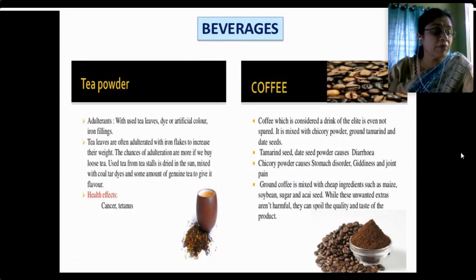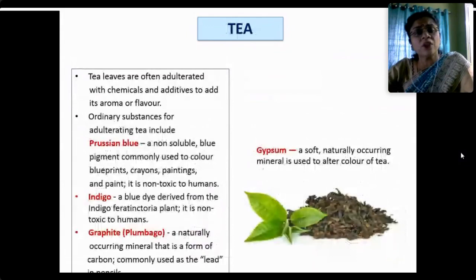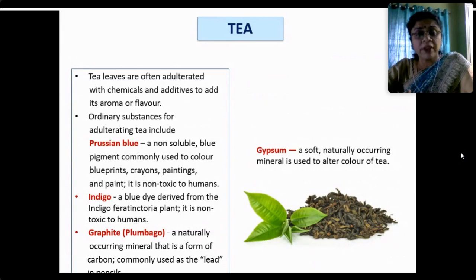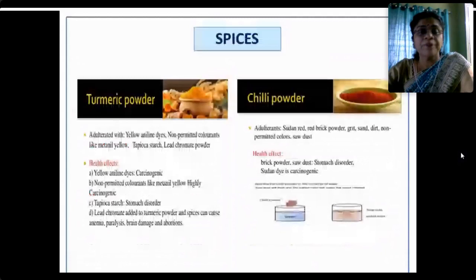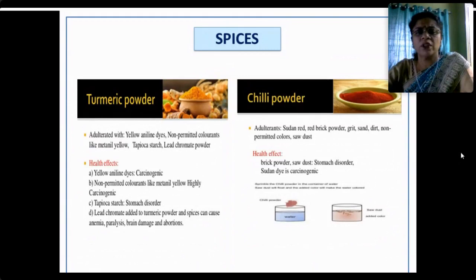Ground coffee is also mixed with cheap ingredients like maize, soya bean and sugar — these may not necessarily be hazardous but can spoil the quality and taste. Tea is also adulterated with Prussian blue — a non-soluble blue pigment used in blueprints and crayon paints — which is non-toxic but may affect taste and quality. Indigo, a blue dye derived from the indigo plant; graphite, a naturally occurring form of carbon; and gypsum, a soft mineral, are all used to alter the color of tea.